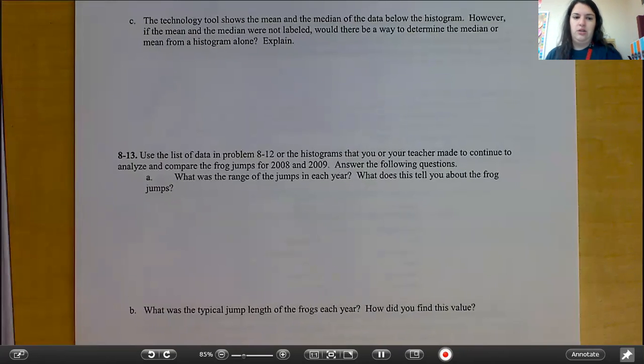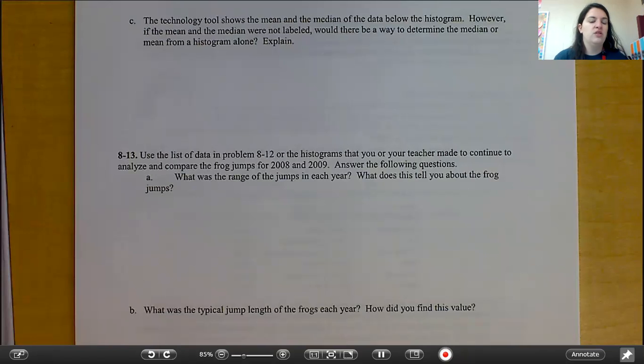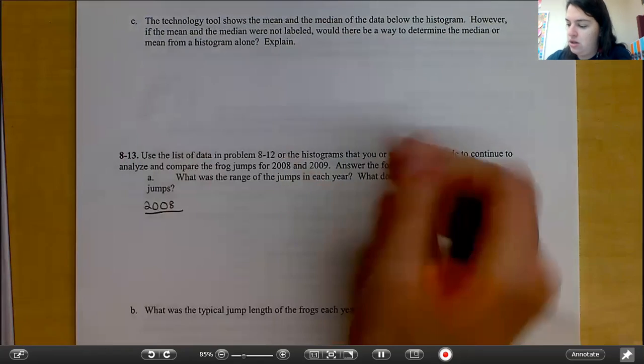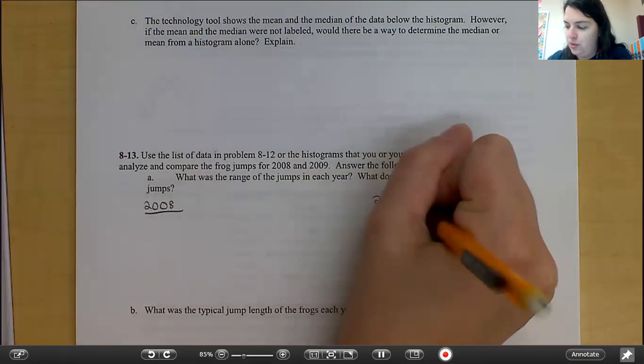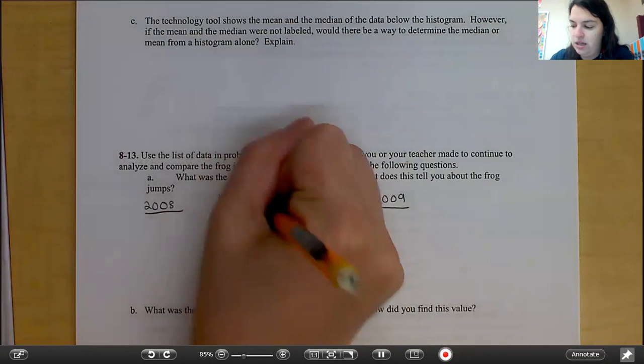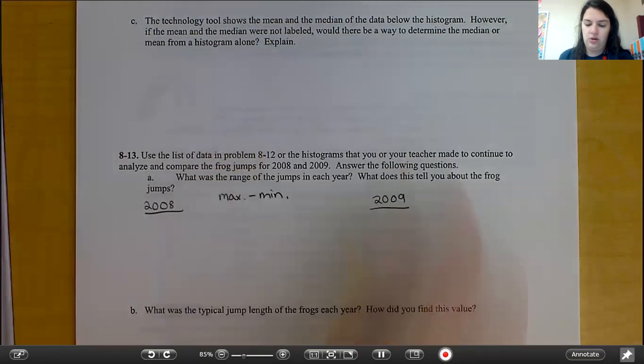8.13 says, use the list of data in problem 8.12 or the histograms that you or your teacher made to continue to analyze and compare the frog jumps from 2008 and 2009. Answer the following questions. What was the range of jumps in each year? What does that tell you about the frog jumps? So, if we're looking at 2008 and 2009, remember the range is the maximum minus the minimum. Go ahead and try that.